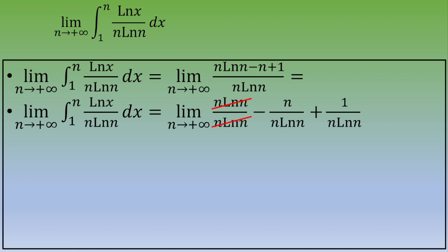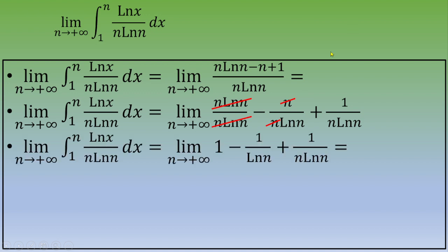Simplifying: the first term n·ln(n)/(n·ln(n)) equals 1. The second term n/(n·ln(n)) = 1/ln(n), which goes to 0 as n goes to infinity. The third term 1/(n·ln(n)) also goes to 0. So the limit is 1 minus 0 plus 0, which equals 1. The limit is 1.